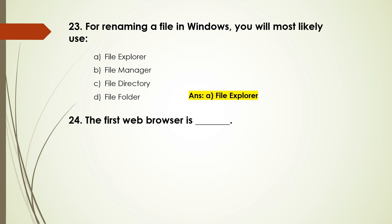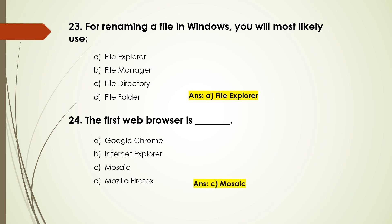Question number 24: The first web browser is — options are: Google Chrome, Internet Explorer, Mosaic, Mozilla Firefox. The answer is option C, Mosaic.